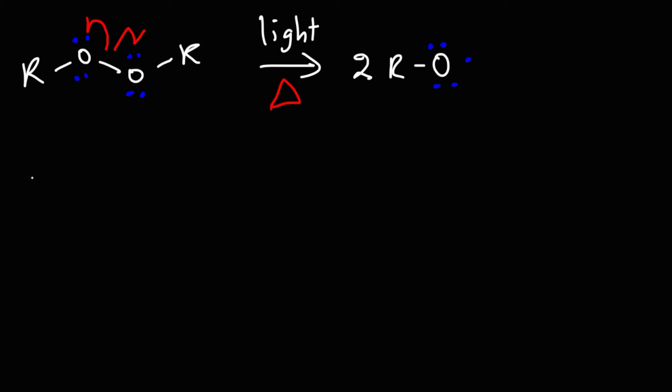Now, in the next step, one of the two oxygen radicals is going to react with hydrobromic acid. Now, keep in mind, a half arrow represents the flow of one electron. A full arrow represents the flow of two electrons. So this oxygen radical is going to extract a proton, and so we're going to form an OH bond. The other electron will go back to the bromine atom, producing a bromine radical.